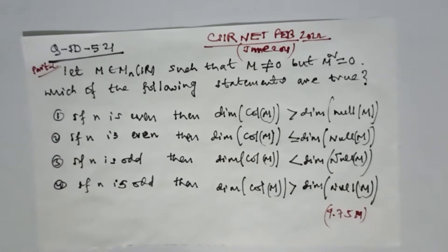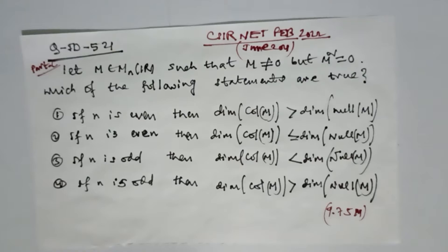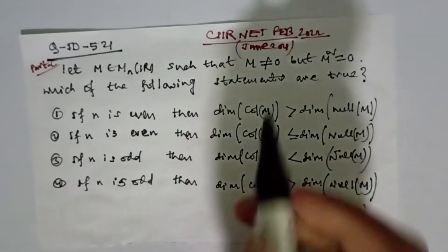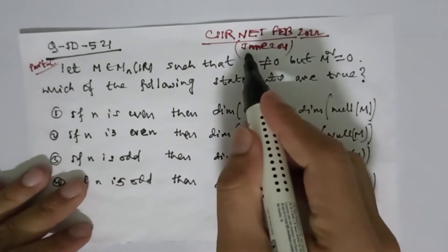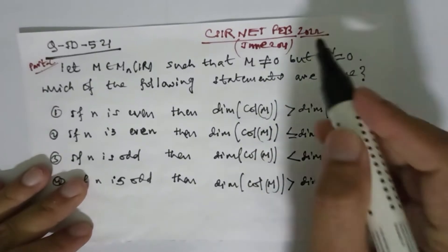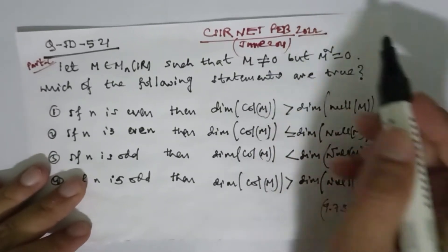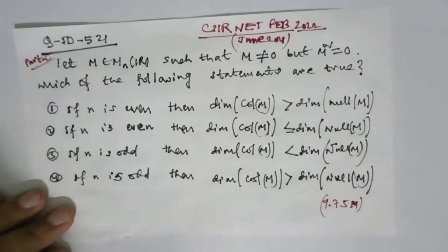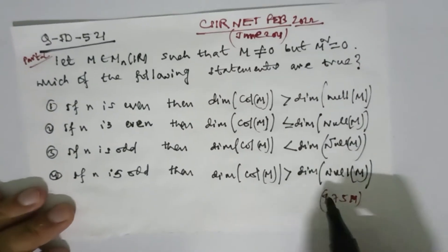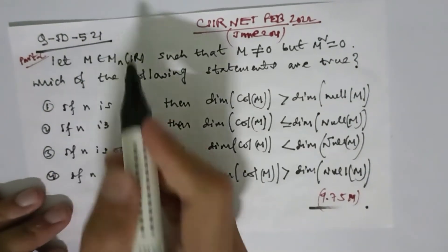Hello, dear audience. I am Mourinho Laislam. Today in this video we are going to discuss an important question of CSE NET June 2021, which happened on February 2022. This question is basically from Part C and it is a 4.75 mark question. The Question ID is 521.